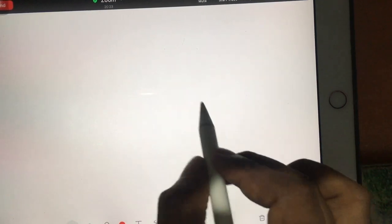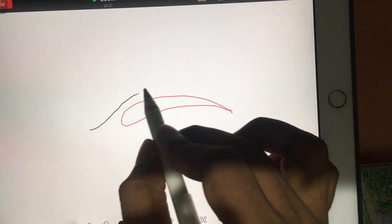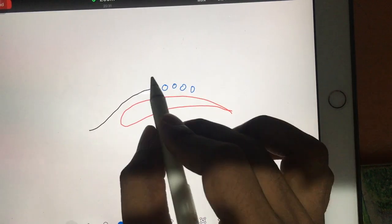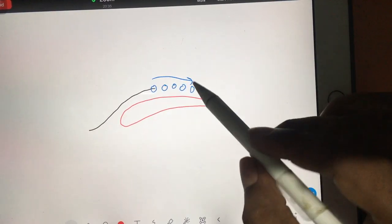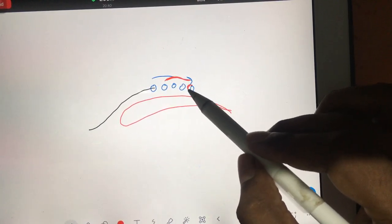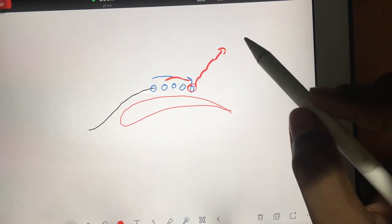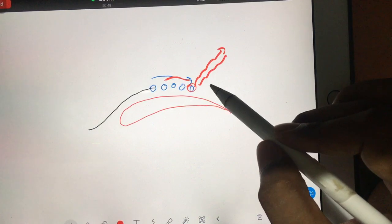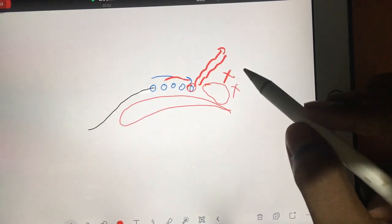See guys, whenever there is flow happening over airfoil, then energy of the flowing molecules decreases. And after some time, because of the lack of energy, these molecules will leave the surface. And because these molecules are leaving the surface, after that whatever portion is remaining, that portion will not help you to produce the lift.